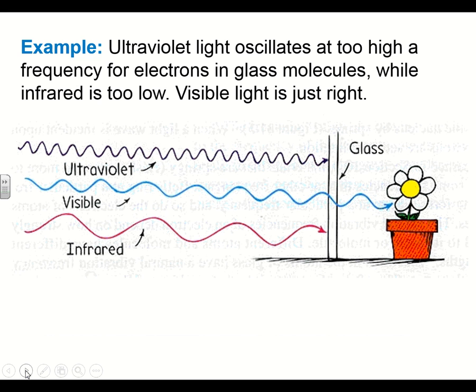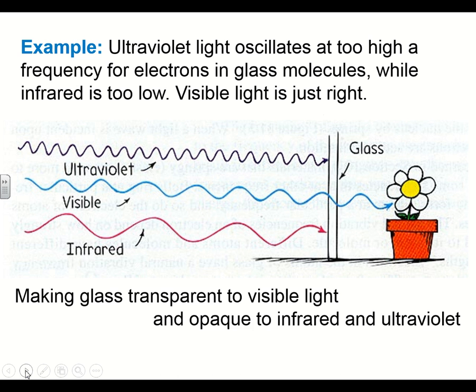Ultraviolet light oscillates at too high a frequency for the electrons in glass molecules, and infrared light is too low. Visible light is just right, which is why plants can grow inside, but you can't typically get sunburnt or get really hot inside your house from the sun. Your glass is made of molecules that vibrate at a certain frequency, and only visible light vibrates at the right frequency to pass through. Glass is transparent to visible light but opaque to infrared and ultraviolet.